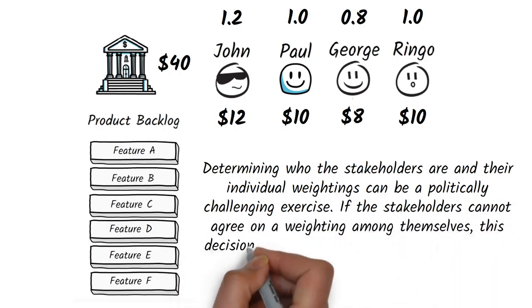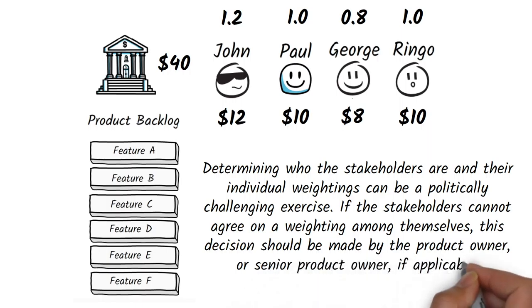If a stakeholder group can't agree on a weighting amongst themselves, it will be up to you as a product owner to make that decision. Whoever makes that decision has got to be somebody sufficiently respected in the organisation for it to have meaning. Weighting our stakeholders is pretty similar to a departmental budgeting process, and one advantage is that the management team can make one single upfront decision about the relative priorities of stakeholders. That avoids them having to micromanage individual backlog items, and instead empowers the stakeholder group with control over priorities based on a strategic decision.